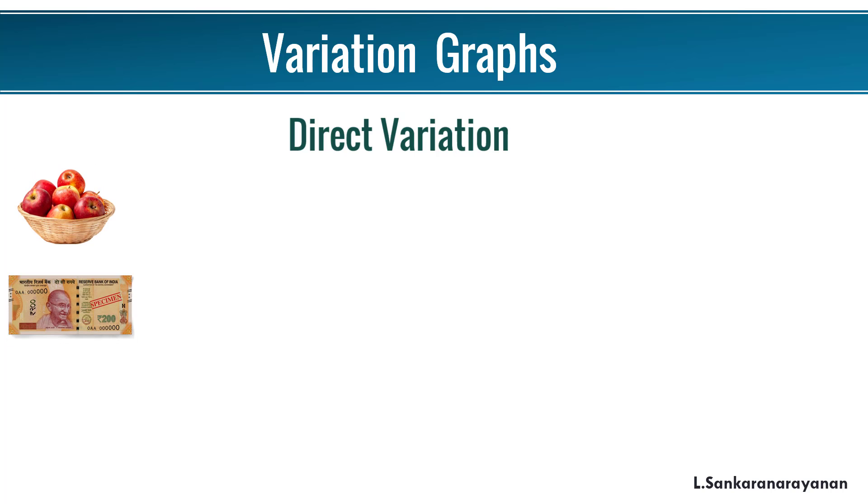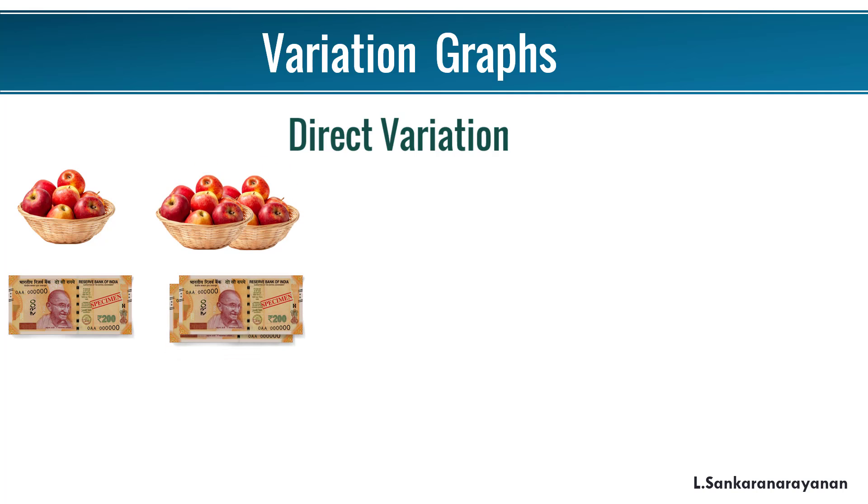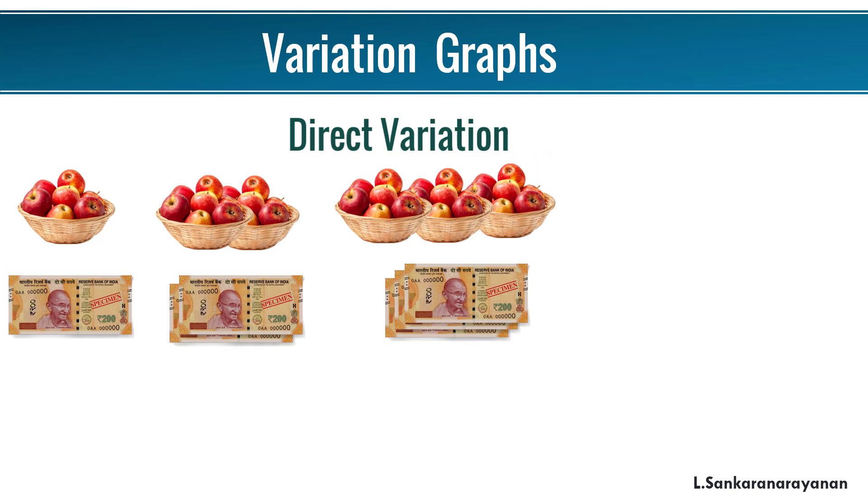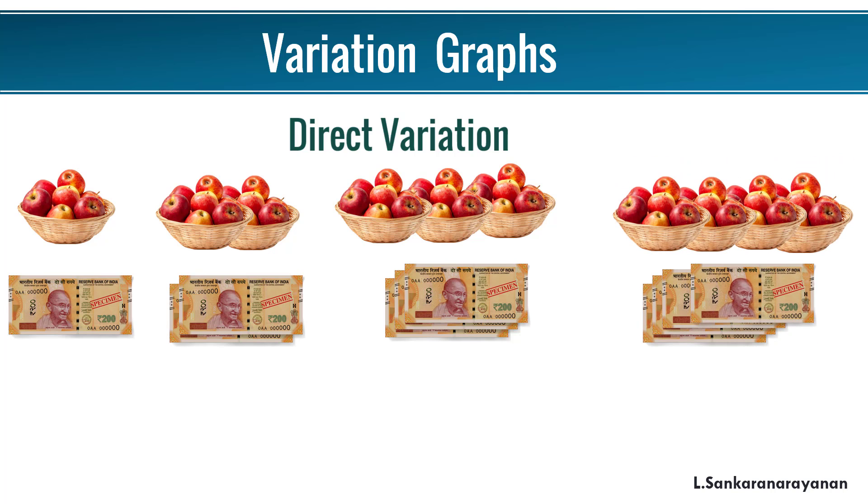Let us imagine the scenario. I go to the market to buy some apples. The vendor says the cost of 1 kg apple is rupees 200. So if I want to buy 1 kg, I have to give rupees 200. If I want to buy 2 kgs, then I have to give 400, and 3 kg is 600, and for 4 kg is 800, and it goes on like that.